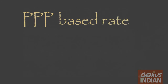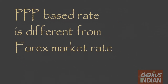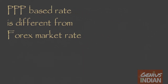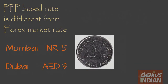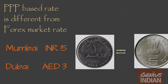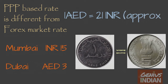PPP of any given currency pair is often very different from the current market exchange rate. For example, if the price of a samosa is 15 rupees in Mumbai and 3 dirhams in Dubai, then it means a dirham should be equal to 5 rupees. Whereas the normal forex market rate for the same is almost 21 rupees.